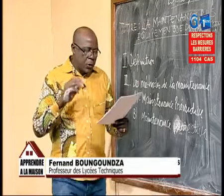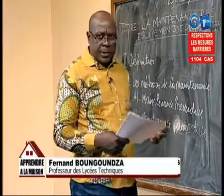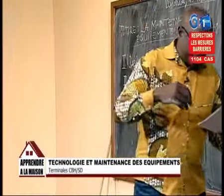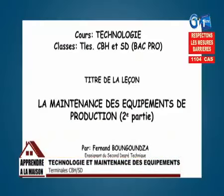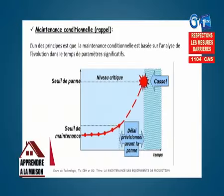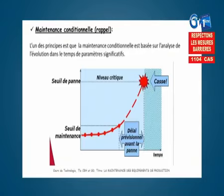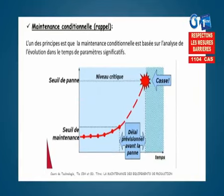Tout à l'heure, nous nous sommes arrêtés sur la maintenance conditionnelle. Donc, en rappel, nous sommes arrêtés sur la maintenance conditionnelle. On disait que l'un des principes de la maintenance conditionnelle était basé sur l'analyse de l'évolution dans le temps des paramètres significatifs. Ensuite, on avait un tableau où nous avons le seuil de panne, le seuil de maintenance, le niveau critique, les délais prévisionnels avant la panne dans le temps.